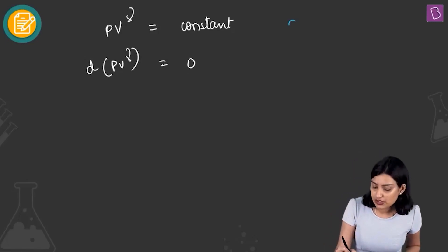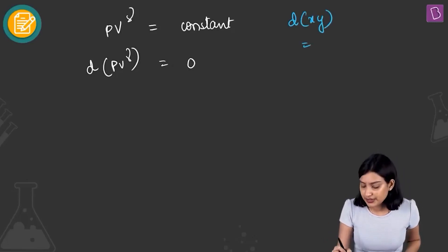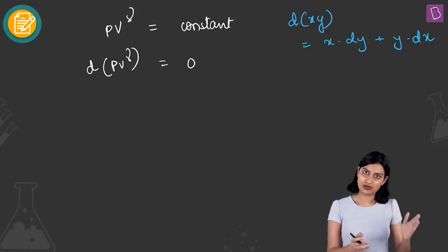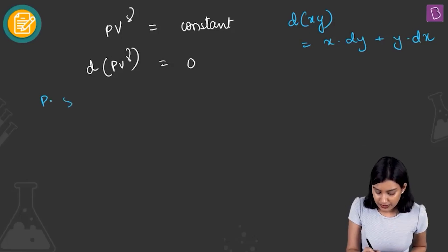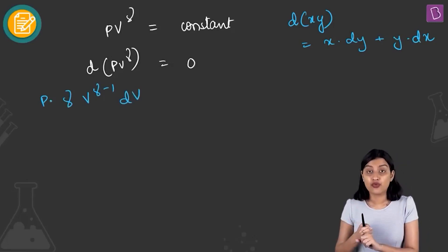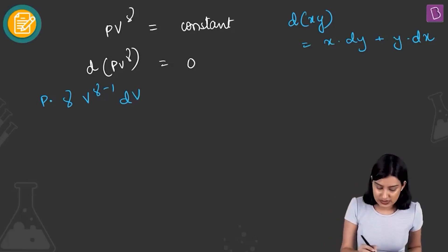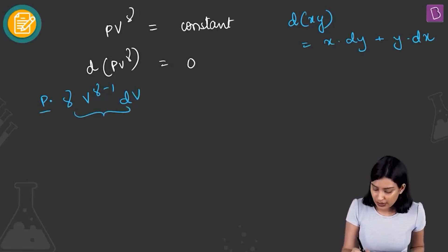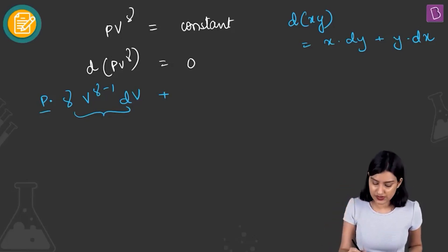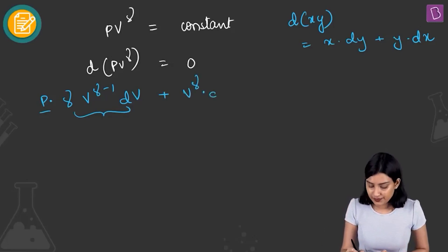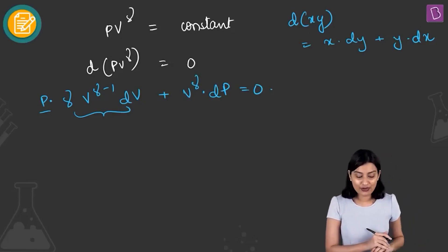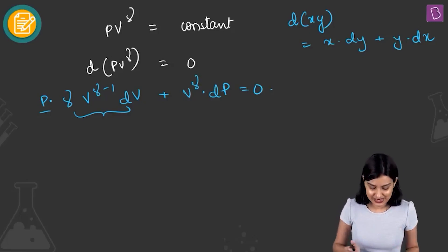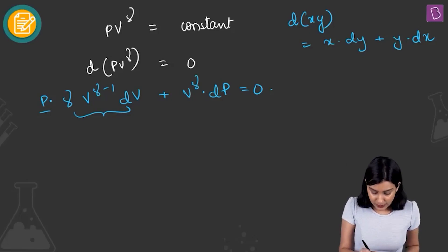Applying the product rule: P · γ · V^(γ−1) · dV + V^γ · dP = 0. Here P is treated as a constant for the differentiation of V^γ with respect to V, giving the first term, and V^γ multiplied by dP gives the second term. Setting the whole expression equal to zero.